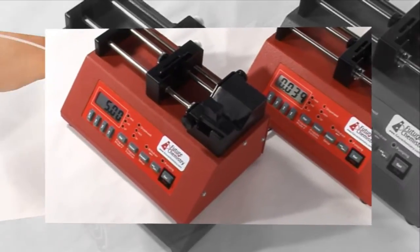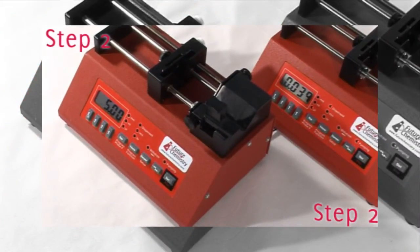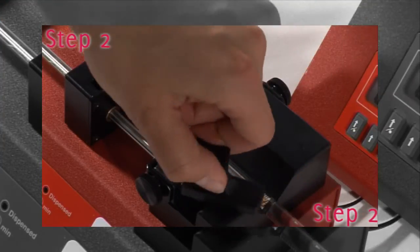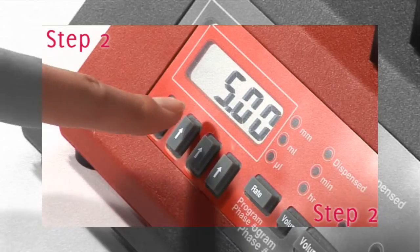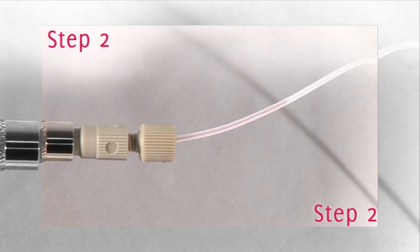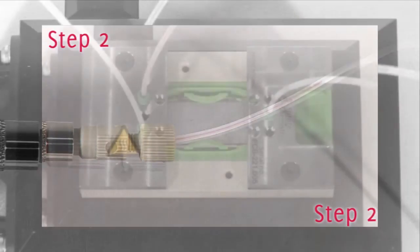In the second step, the tubes are connected to two syringe pumps. Syringes filled with your reagents are placed into the pumps. The pumps are set to the desired flow rate and started. Now a continuous flow inside the micro reactor has been established.